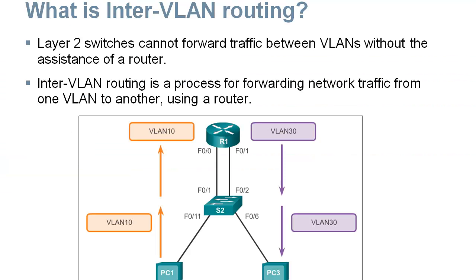Inter-VLAN Routing. If I've got this switch here and it has VLAN 10 and VLAN 30, these two PCs can't talk to each other through the switch because the VLANs deny them access. They have to go to a router in order to communicate with each other. As soon as you implement VLANs, you have to have a router to route traffic between VLANs.